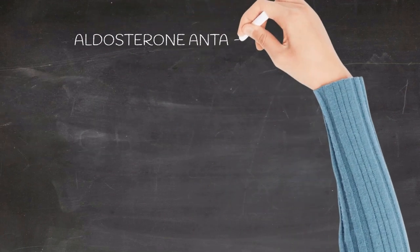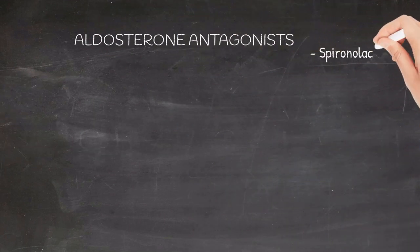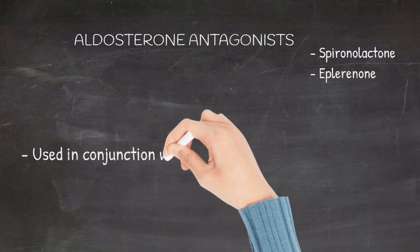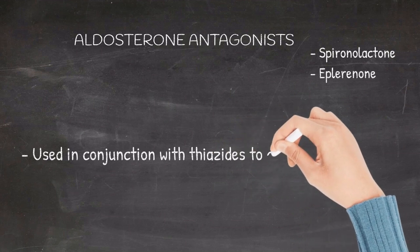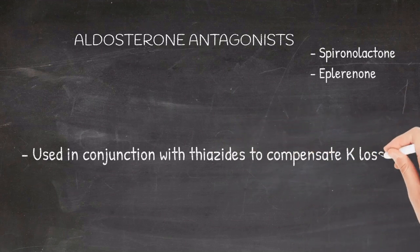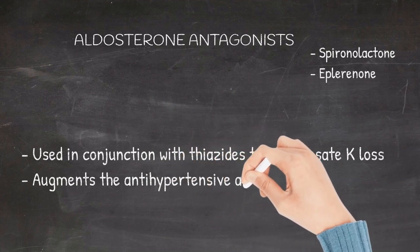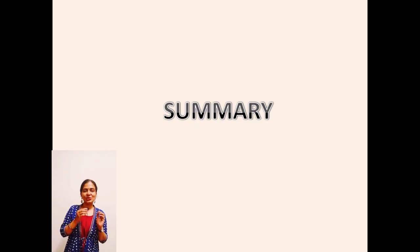Aldosterone antagonists like spironolactone and eplerenone: these group of drugs are used in conjunction with thiazide-like diuretics to compensate for the potassium loss. They also augment the antihypertensive effect of thiazides.